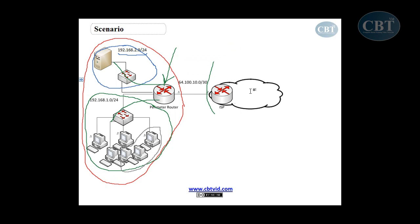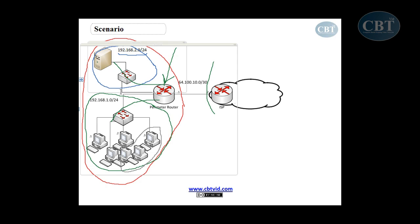If you want to configure this exact scenario yourself, you can have a lab at home with two cheap routers from eBay, or use Packet Tracer where you can bring in computers, servers, and switches to configure everything. Packet Tracer is a simulator that requires less resources compared to GNS3.